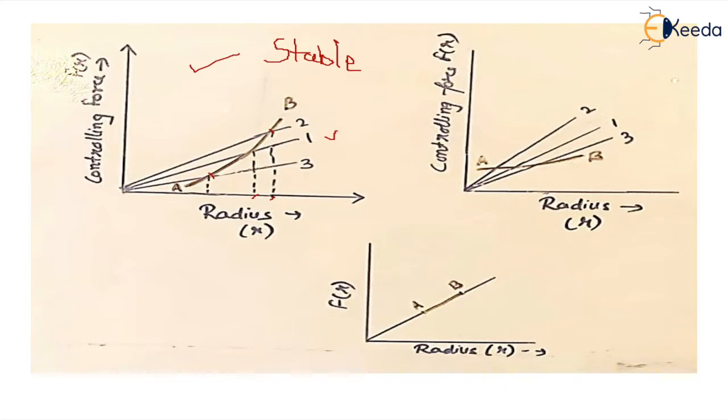Let's say AB is the controlling curve and 1, 2, 3 are the speed curves. So 1 is your mean position. At the point of intersection of AB and 1, if we plot it, we get the corresponding radius of rotation for that governor.